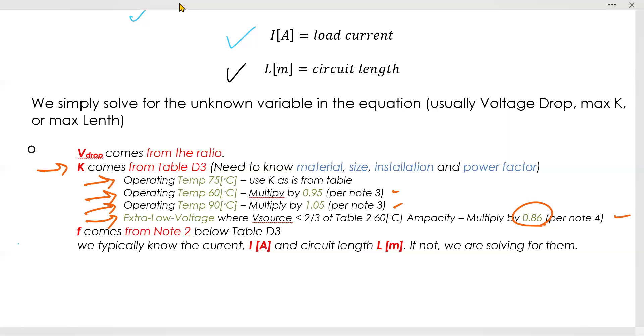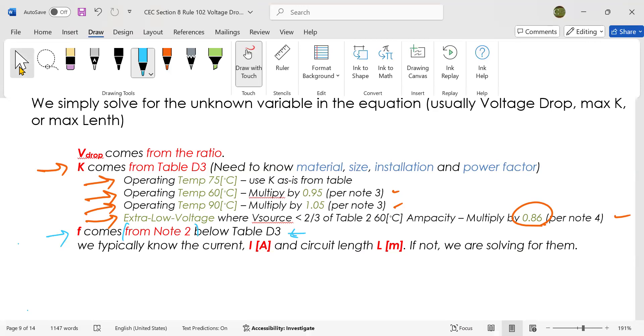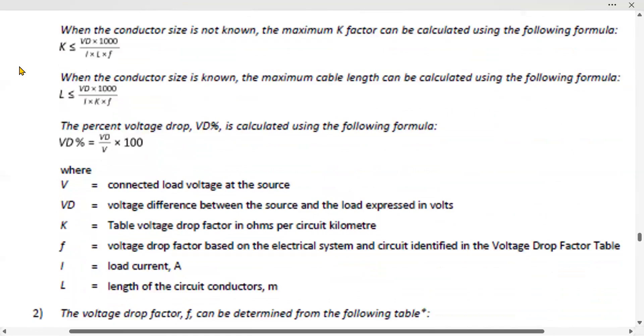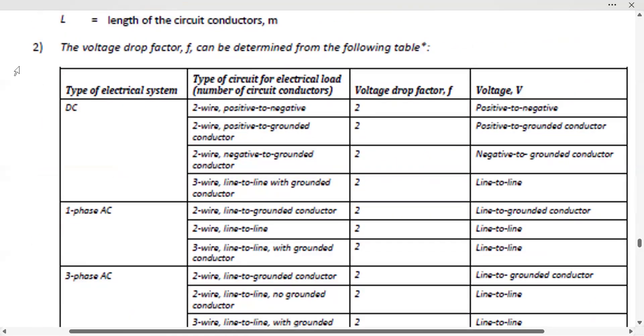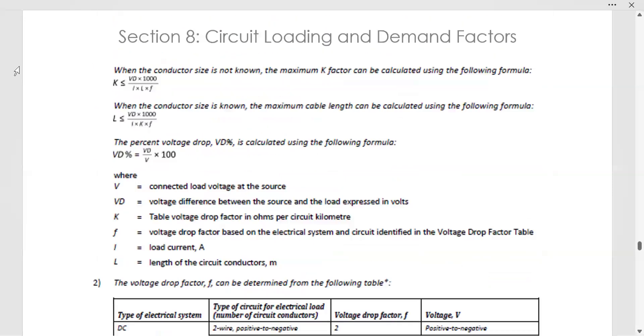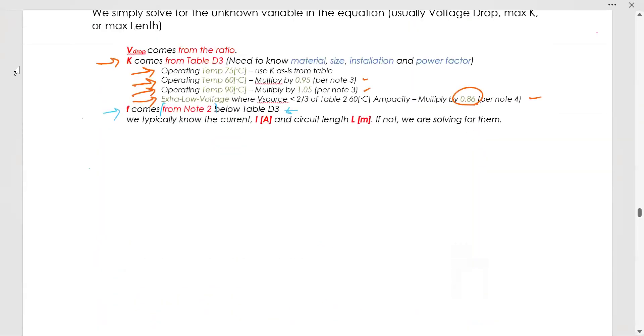Now moving on, the other variable is F. And the variable F comes from note 2 below table D3. So the factor F has its own table inside a note. Note 2 is the voltage drop factor F. It's going to be either 2 or 1.73. And that's it.